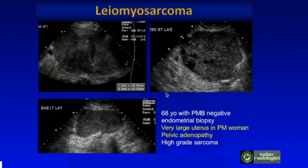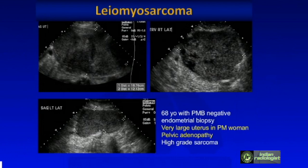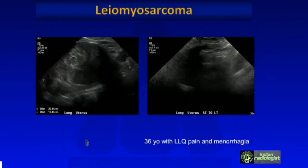This is a very large uterus — almost 19 centimeters — in a 68-year-old woman with postmenopausal bleeding and a negative endometrial biopsy (because the endometrium itself was not affected). She had a very large heterogeneous uterus, and additionally we saw a left inguinal region mass. That combination indicated very likely sarcoma, which turned out to be a high-grade sarcoma.